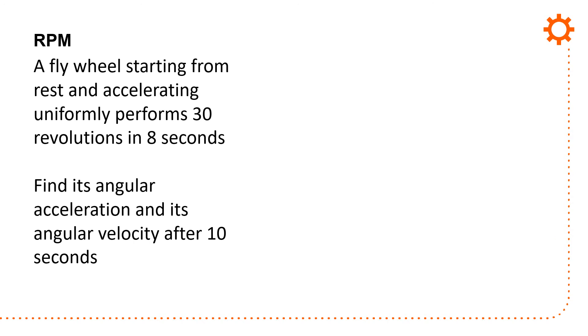So let's do a real example, one where you actually look at numbers. So you have a flywheel accelerating starting from rest and accelerating uniformly, and it gets 30 revolutions in 8 seconds. Find the angular acceleration and its angular velocity after 10 seconds. So you're given omega 8, and that's 30 over 8—30 revolutions over 8 seconds, 225 rpm or 23.56 radians per second when you do the conversion.